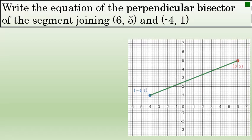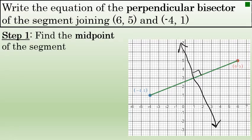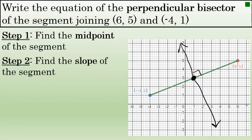The three steps to write the equation of this perpendicular bisector begin with step 1: find the midpoint of the segment. The midpoint of this green line segment will be a point on the perpendicular bisector. However, a single point on the perpendicular bisector is not enough information to write its equation. We'll need some more information about the perpendicular bisector, and we'll get that by finding the slope of the green line segment.